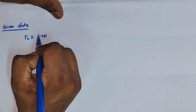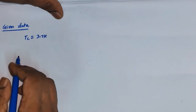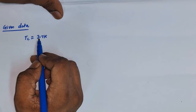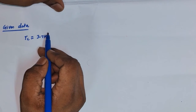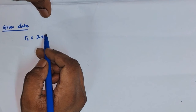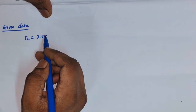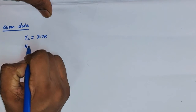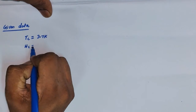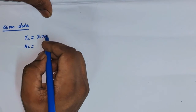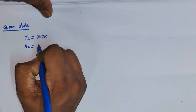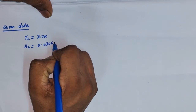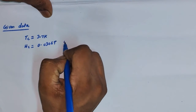What do we mean by the critical temperature? It means below this temperature the tin will act as a superconductor, and above this temperature it will be a normal conductor. The critical field H_c is given as 0.0306 tesla at 0 kelvin.